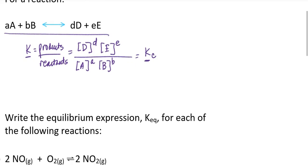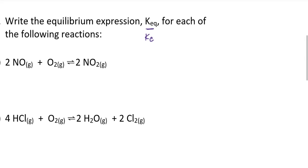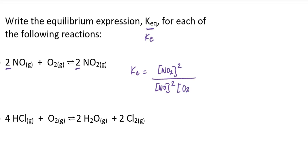Now let's take a few concrete examples of applying the law of mass action. For this first example, if I want to write KC I would take the concentration of the product and raise it to the same power as the stoichiometric coefficient. That would be the concentration of NO2 squared, divided by the concentration of NO squared multiplied by the concentration of oxygen. Notice oxygen has a stoichiometric coefficient of 1, understood, so there is no explicit exponent for the concentration of oxygen in this equilibrium constant.